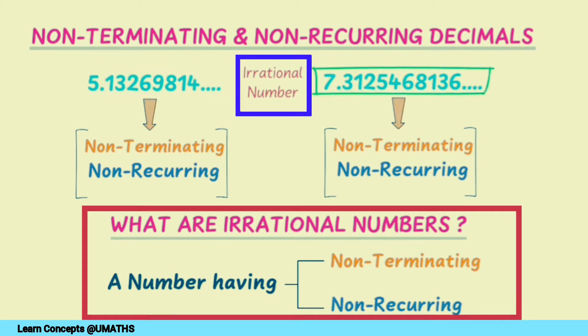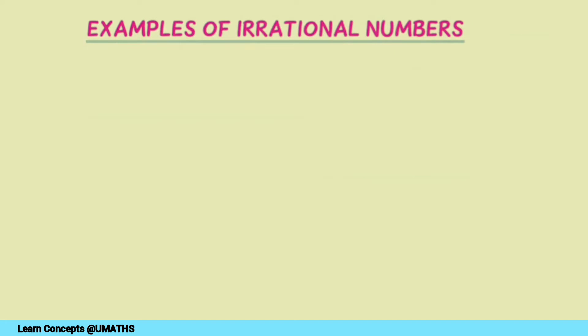Now let us see some other important examples of irrational numbers. For example, √2. If we use a calculator to calculate the value of √2, you will get something like 1.41423562 and so on.